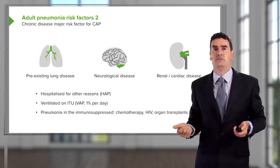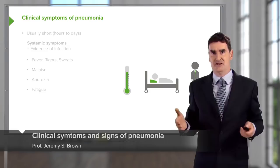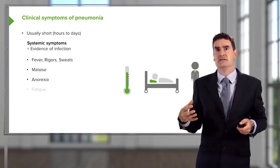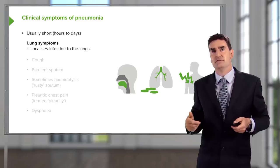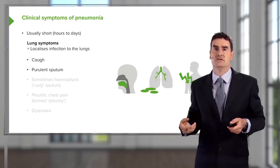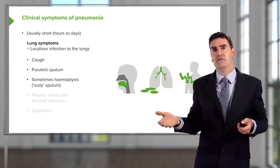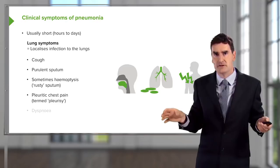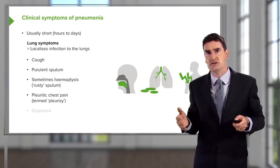The symptoms of pneumonia are straightforward. Systemically, you have fever, feeling unwell, occasional rigors, loss of appetite, and general malaise. Focally, because it is a lung infection, there is cough, sometimes with purulent sputum, occasionally blood-stained — producing a rusty, brownish-coloured sputum. Pleuritic chest pain may occur if there is overlying pleurisy. Because consolidation impairs gas exchange, the patient may also be breathless.